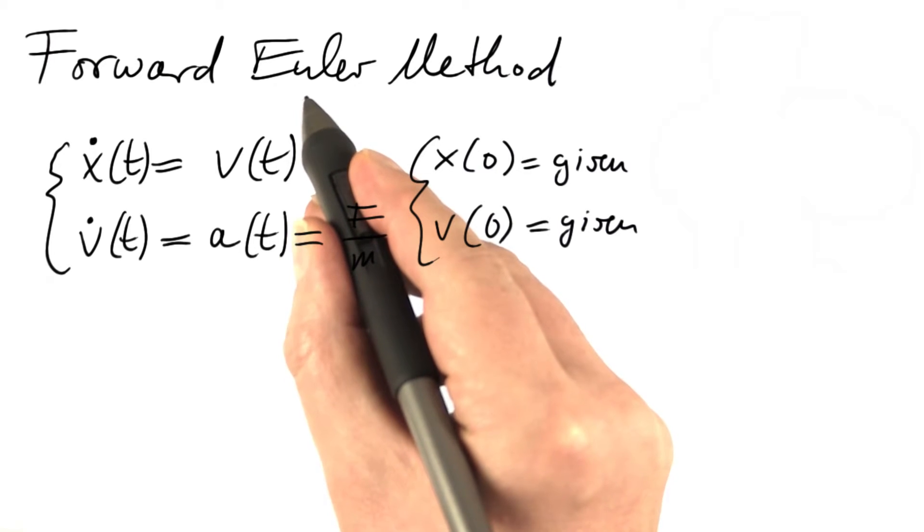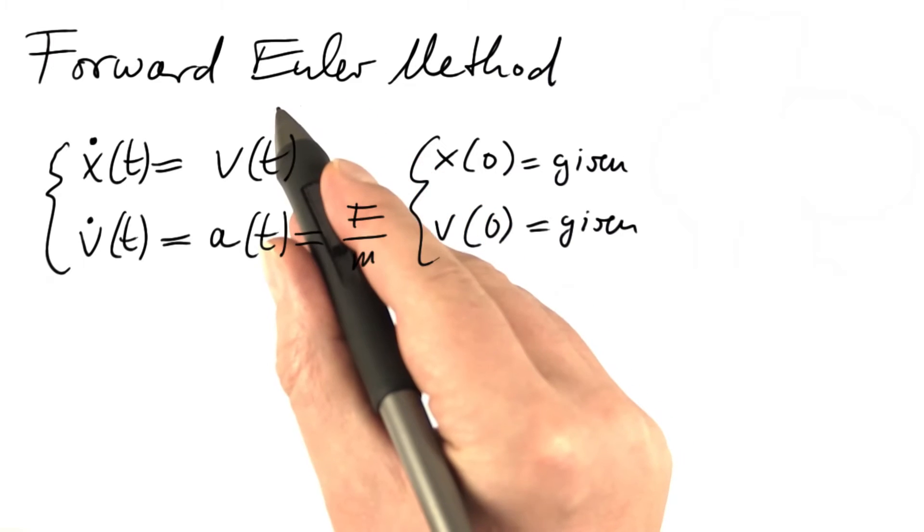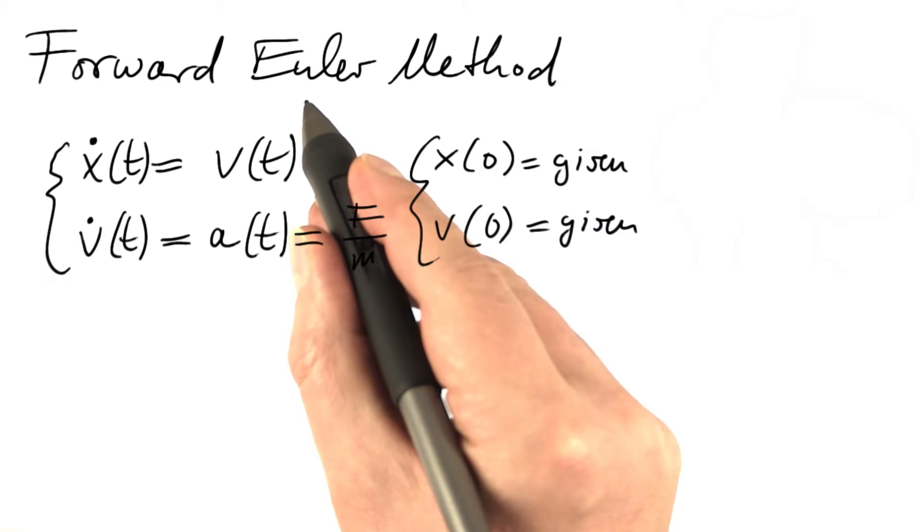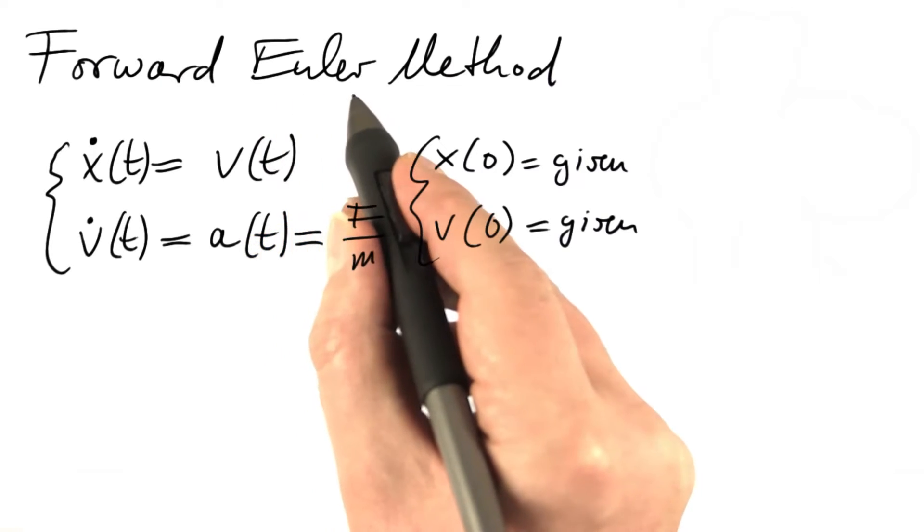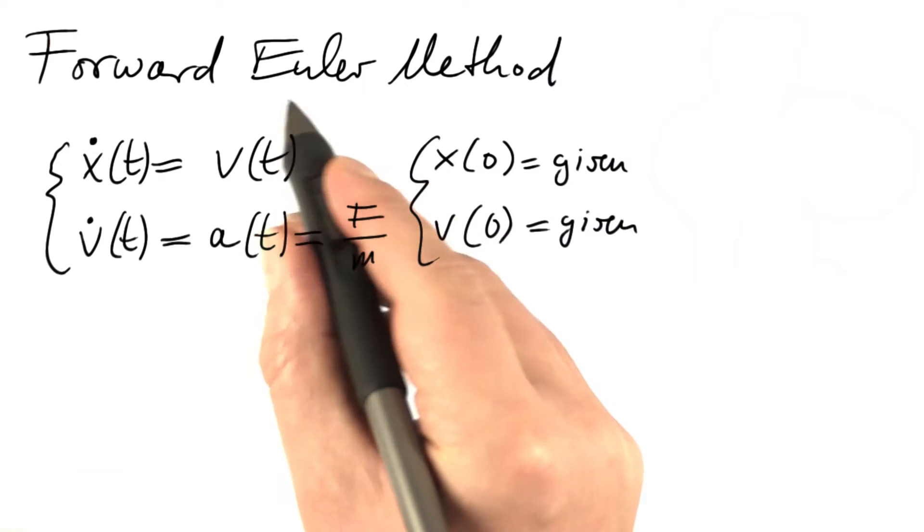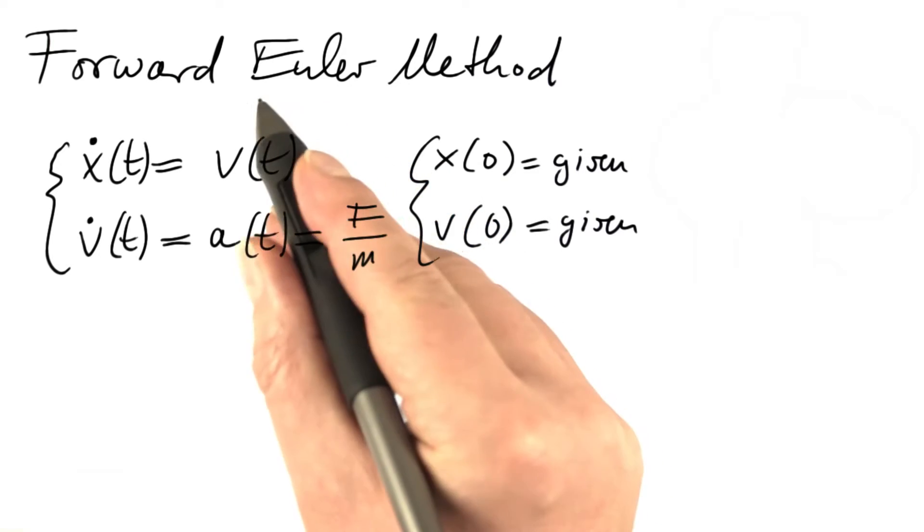Euler was born in Basel, Switzerland. Most people these days use the German pronunciation of his name, Euler, even though the Swiss pronunciation may be different from that. And in the US you may also hear the pronunciation Euler. I'll try to stick to the pronunciation Euler, but forgive me if I from time to time fall back into saying Euler.